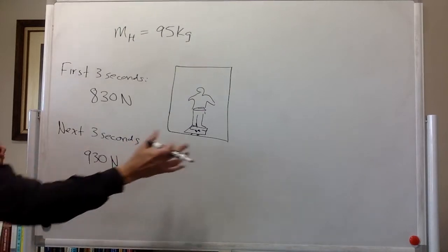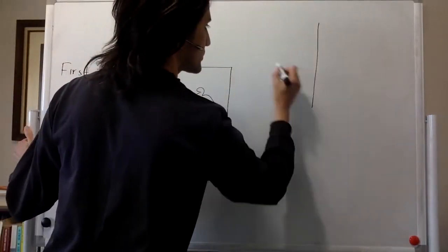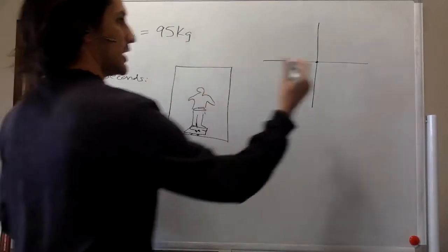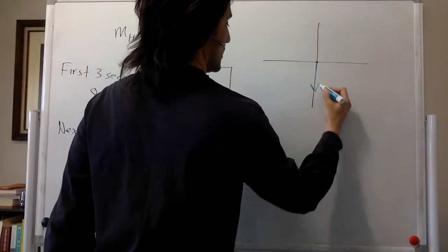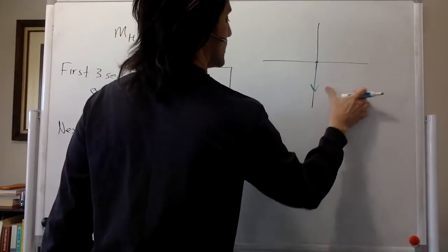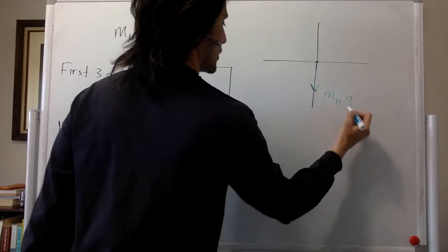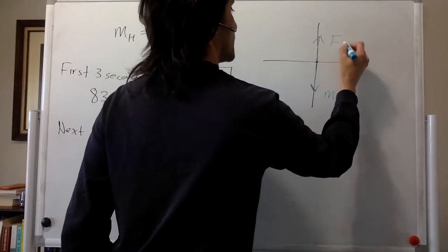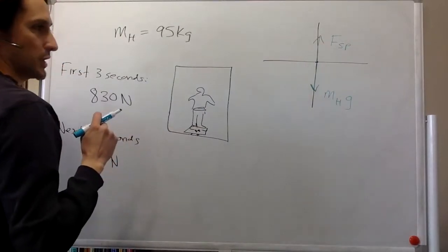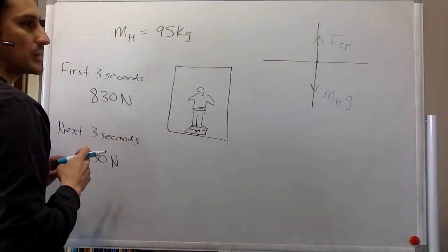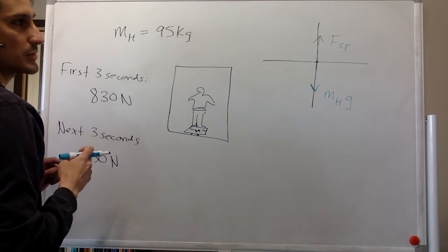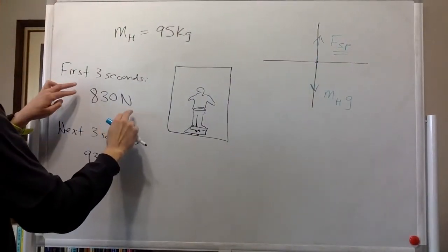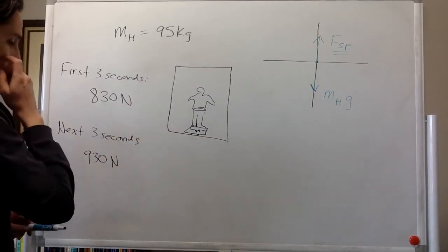So we can go from a pictorial representation to a free body diagram — always the first thing to do. We have the mass of Henry times the acceleration due to gravity pulling down, and upward we have the force of the spring. We know that the scale reading is a measurement, so the spring force corresponds to 830 newtons and 930 newtons.